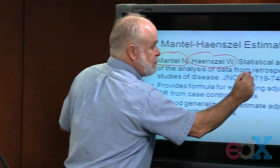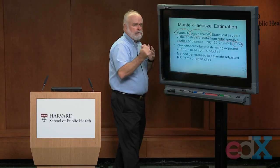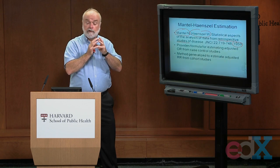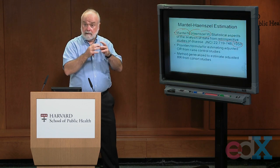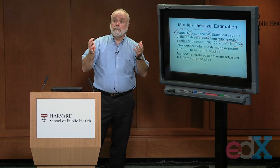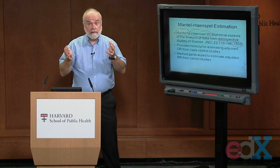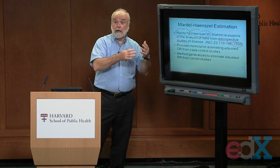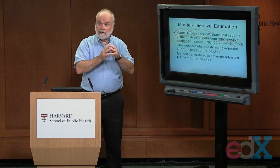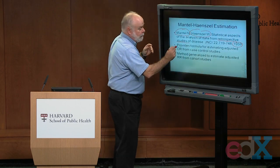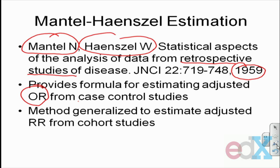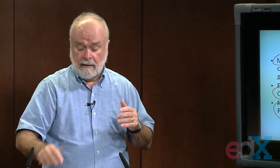In their paper, they talked about retrospective studies — they were talking about case-control studies. So they developed a formula for doing a stratified analysis when you have case-control data. In a case-control study, what do we measure? Odds ratios, exposure odds ratios. We can interpret those as risk ratios or rate ratios from some underlying cohort study. But mechanically, what are we measuring in a case-control study? Odds ratios. What others have done is used their method to develop similar formulas for risk ratios and rate ratios from cohort studies. I'm going to talk about both cohort studies and case-control study data in this lecture.